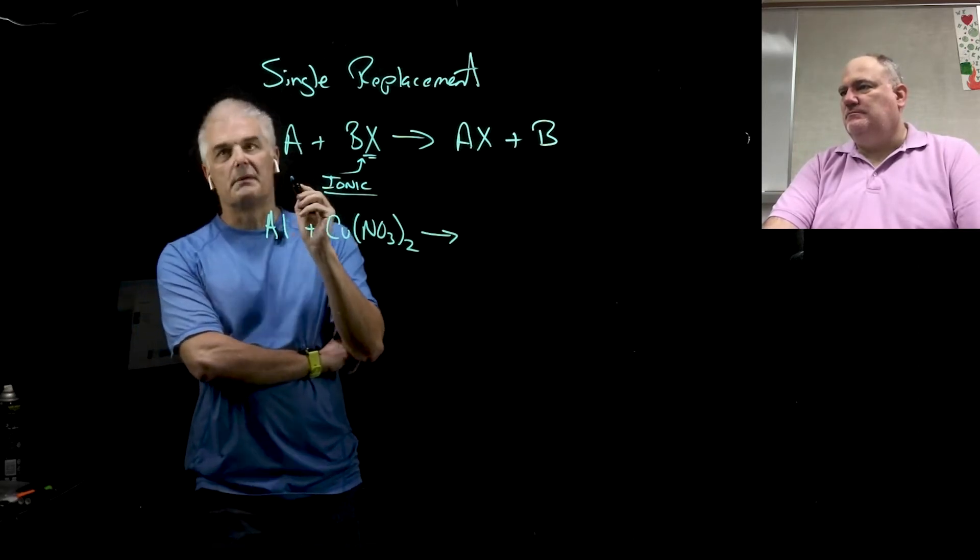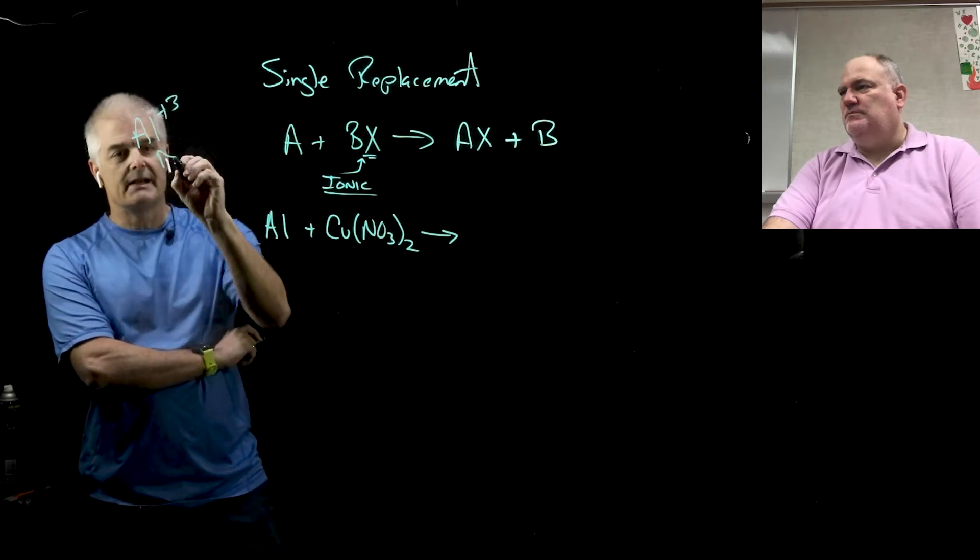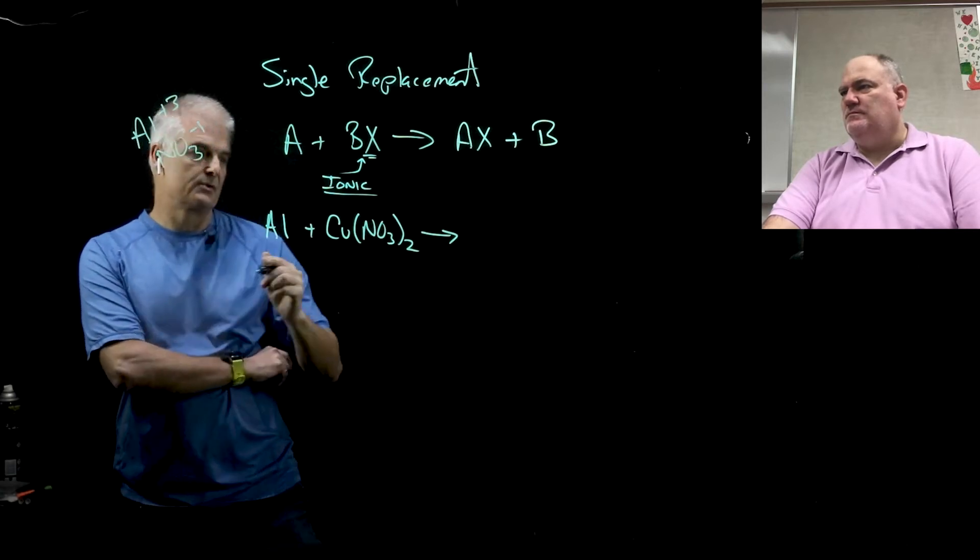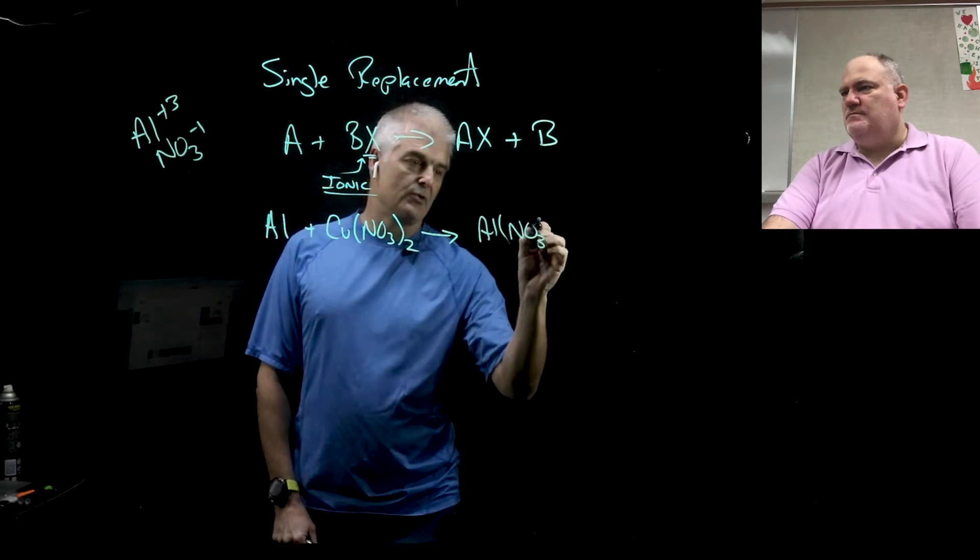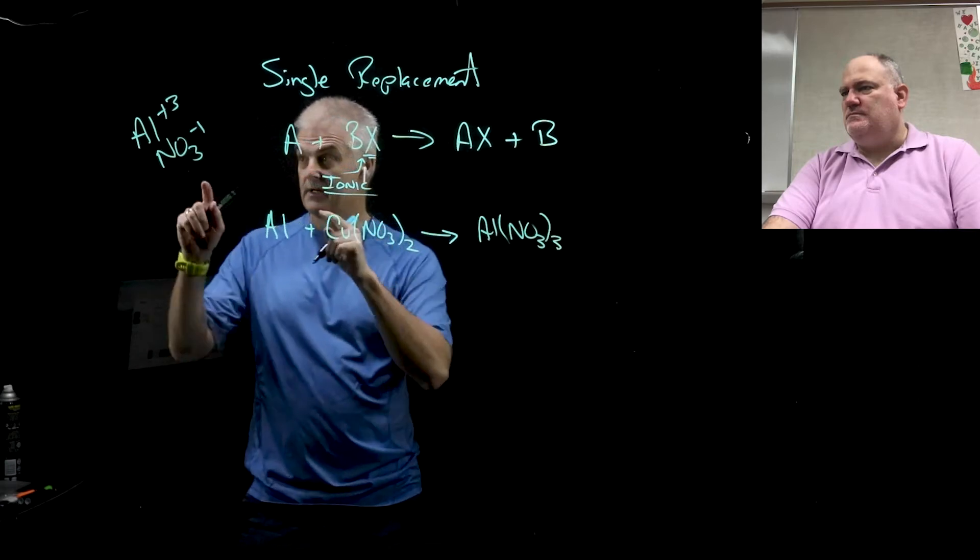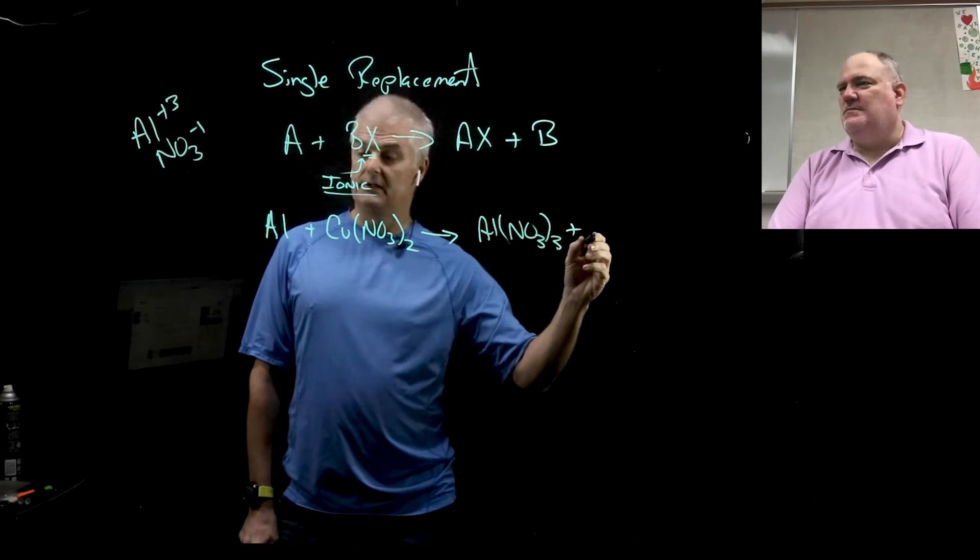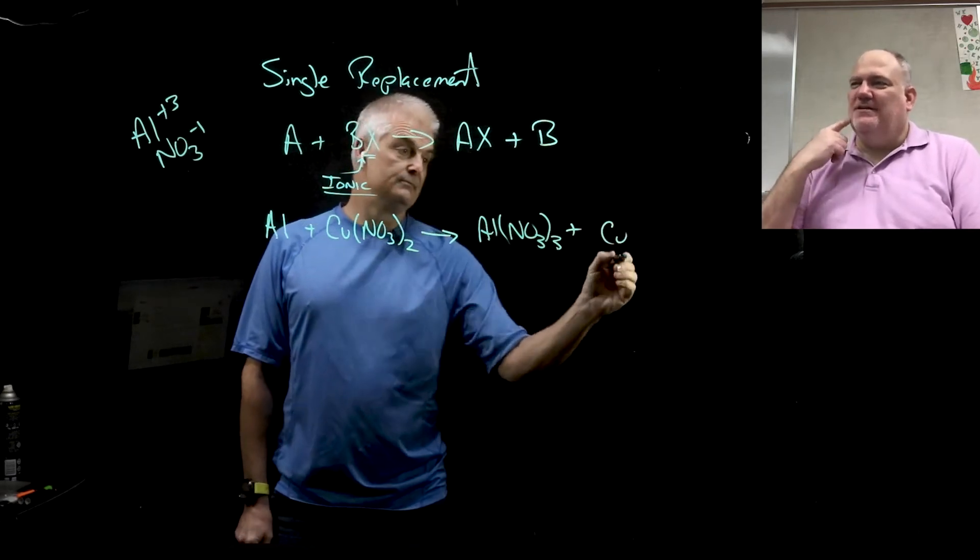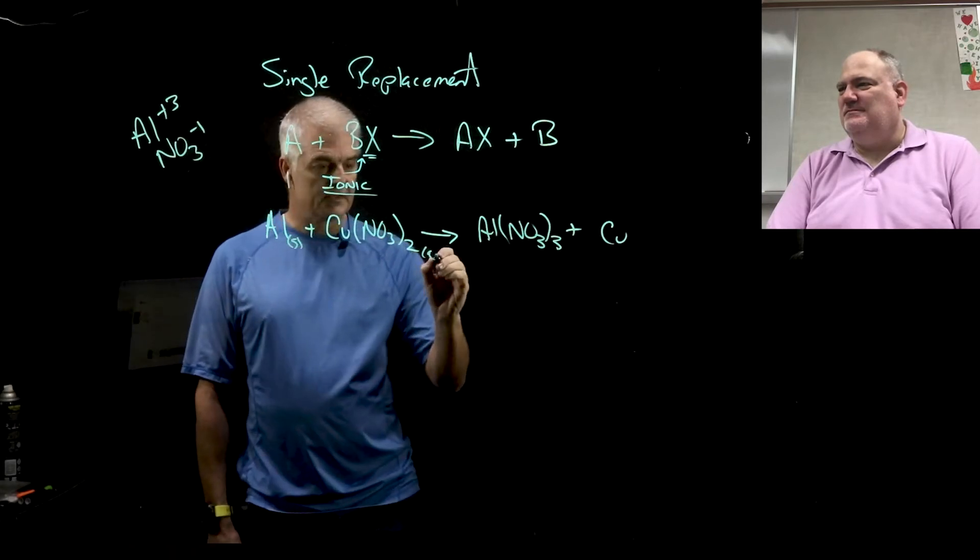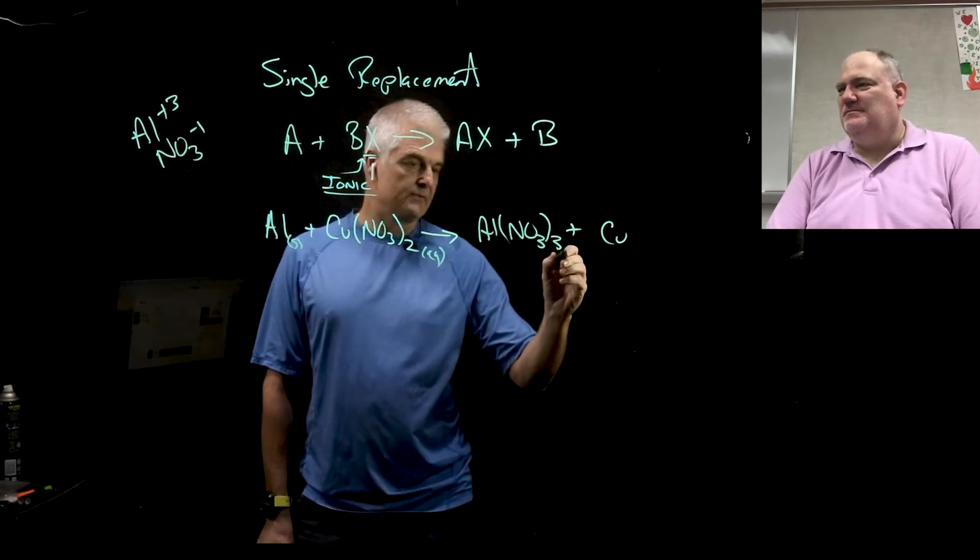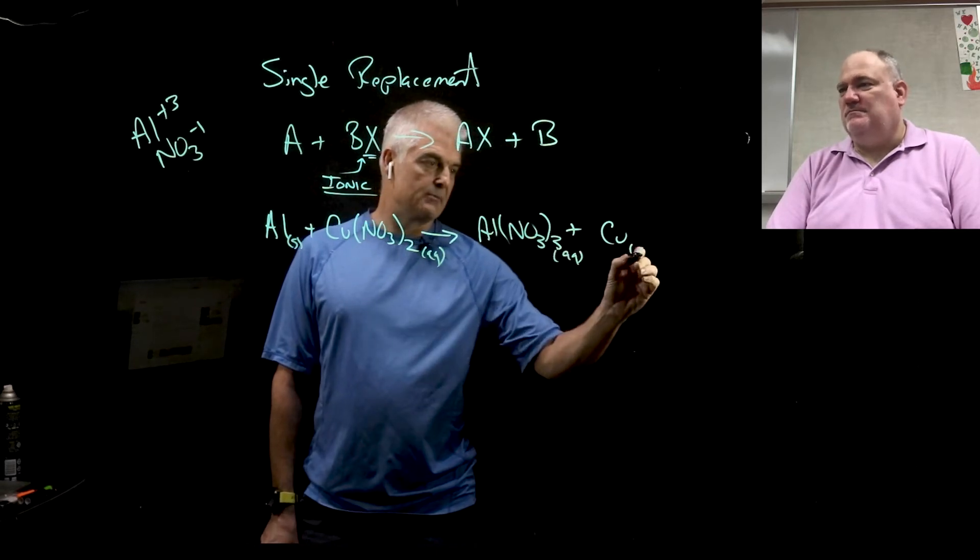So isn't our A aluminum in this case? Yeah, this is the A. This is the B. So the aluminum is going to replace the copper. Now, folks, again, remember we like to do little scratch pads. Aluminum, when it has a charge, is a charge of plus 3. Nitrate, polyatomic ion table, is minus 1. So it's going to make Al positive 3, negative 1. Hopefully you're getting good at this. (NO₃)₃ because of the charge game. And then it kicks to the curb, copper. So by the way, this is a solid and this is aqueous.